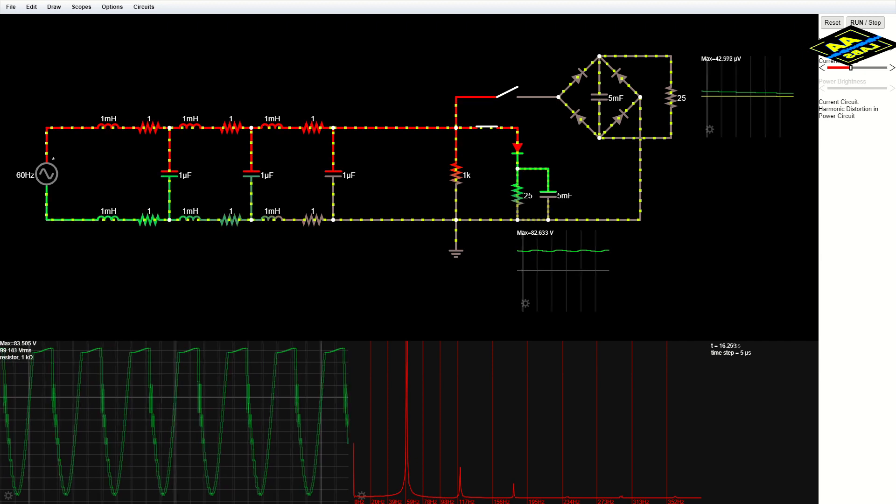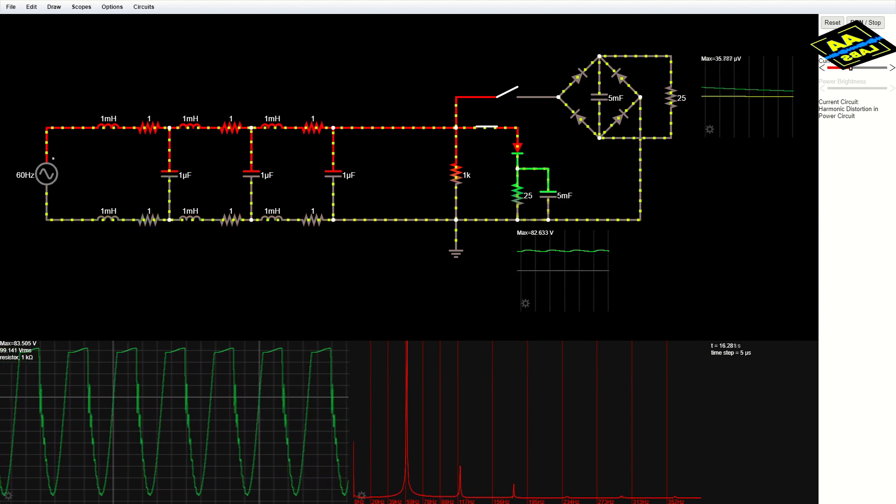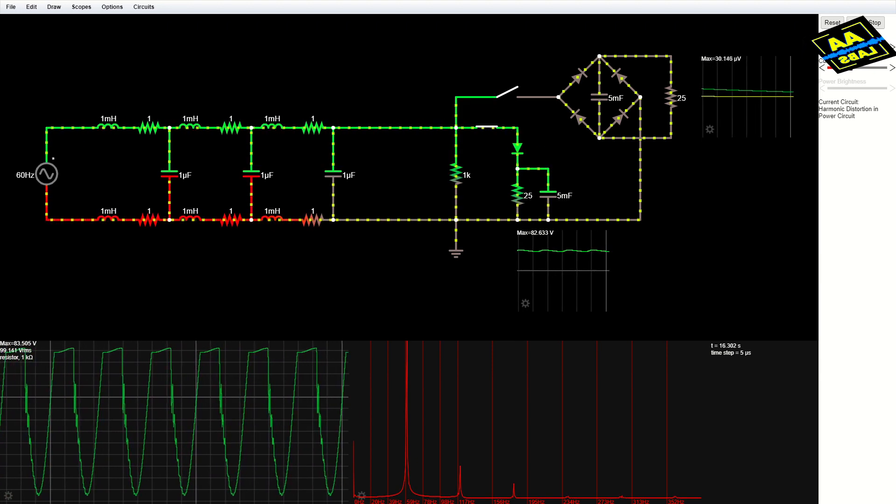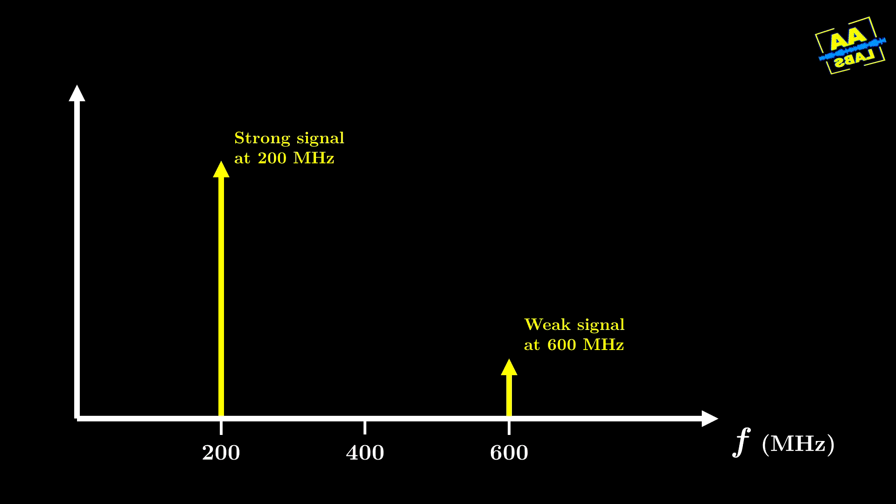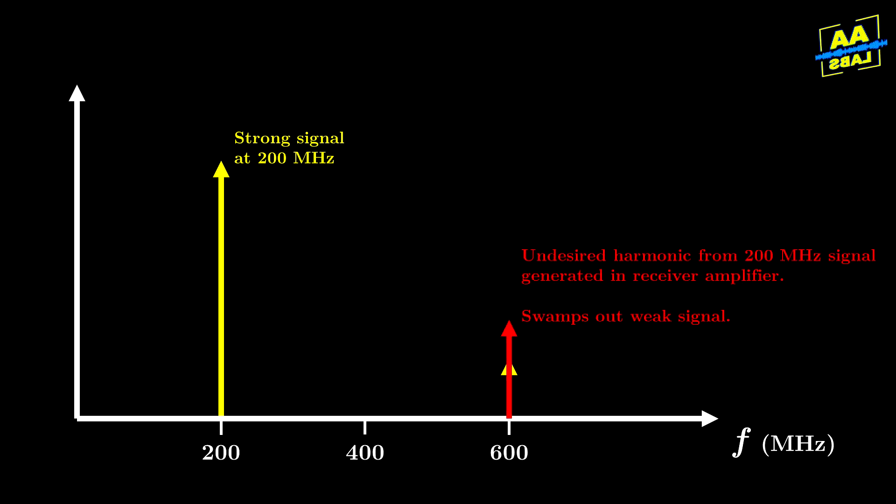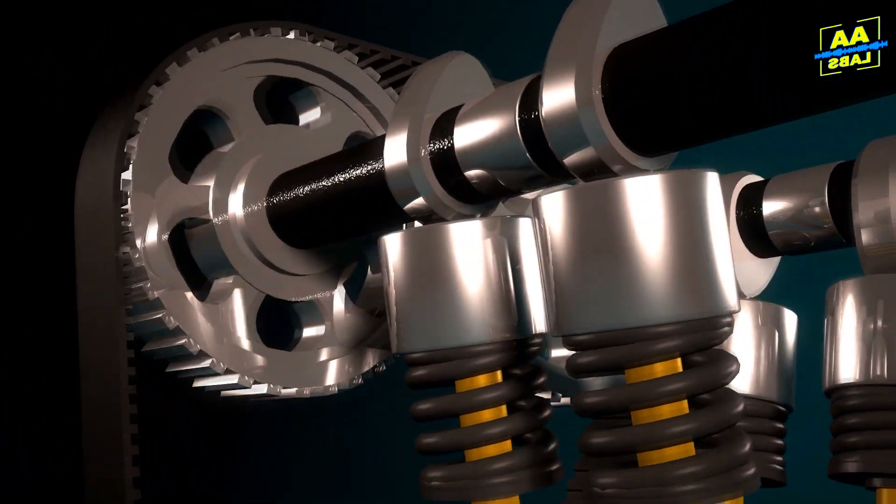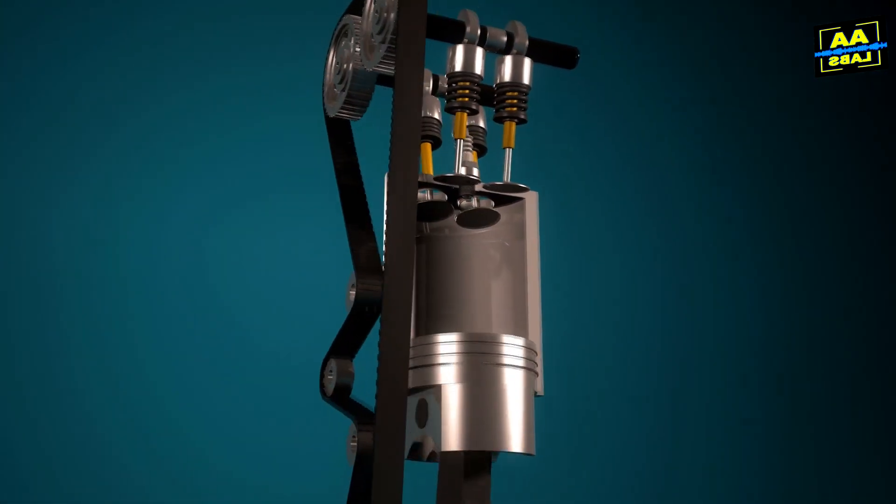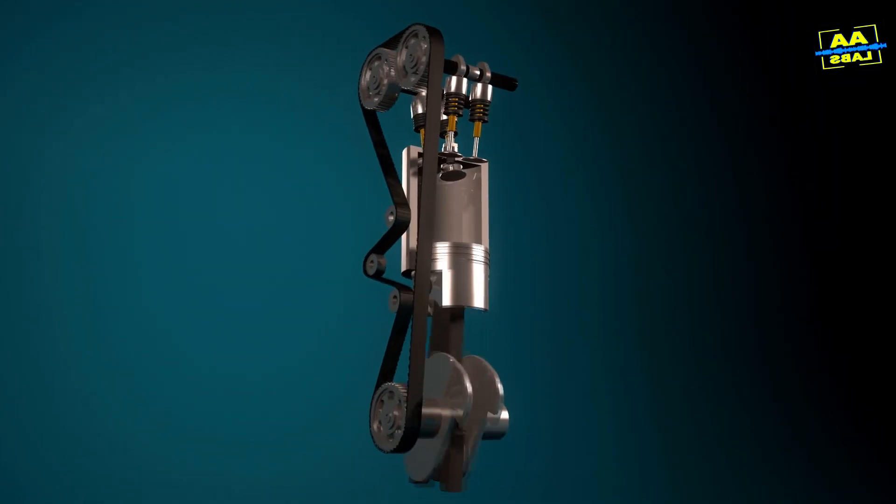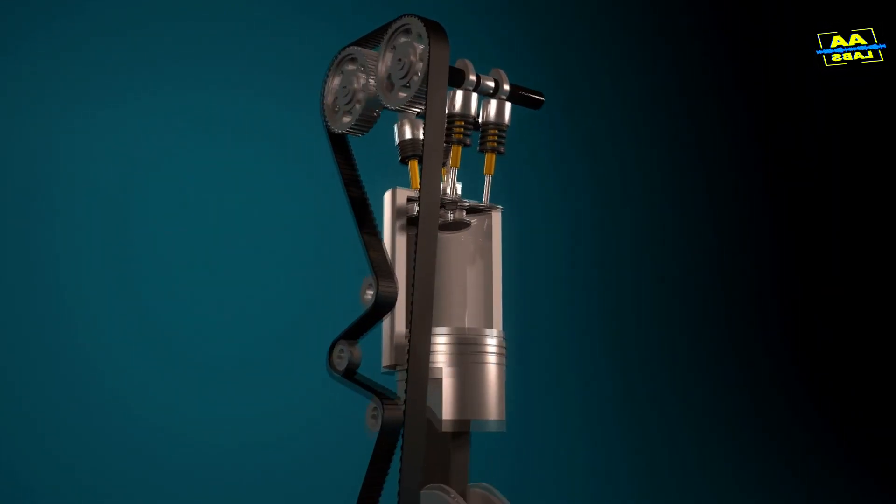So, are harmonics bad? They sure look bad here. And yes, in electrical circuits, harmonics are generally undesirable. In RF circuits, for example, an amplifier could cause a strong signal at 200 MHz to interfere with another at 600 MHz. In power circuits, a motor would experience multiple frequencies at once, causing it to run louder, generate more heat, and probably burn out faster too.